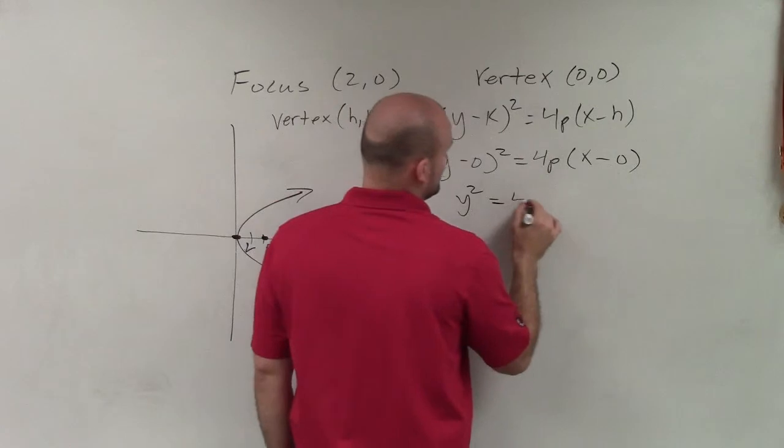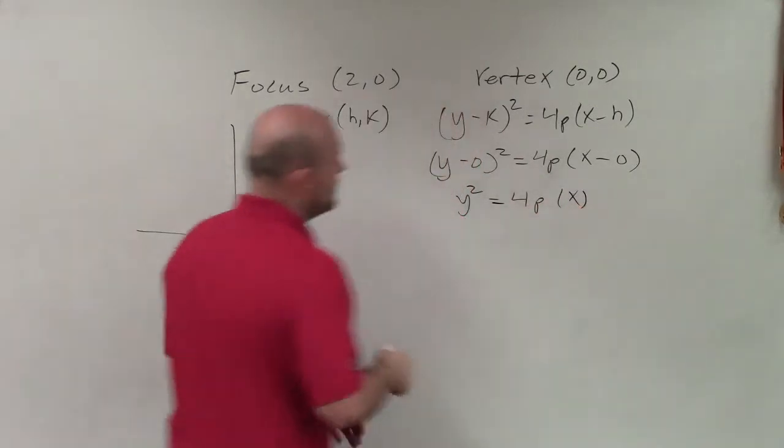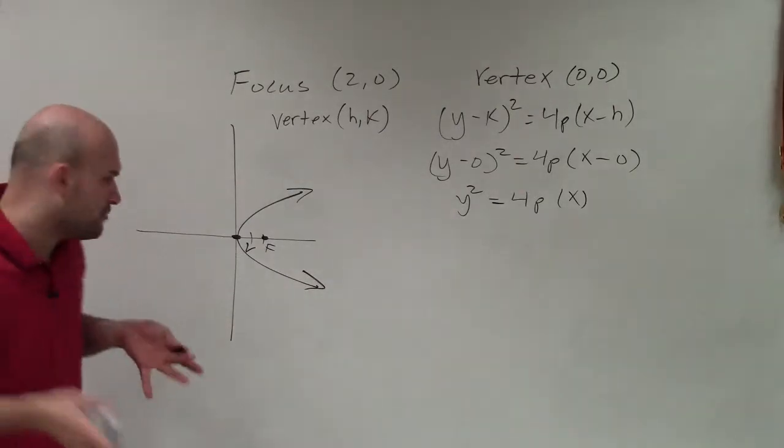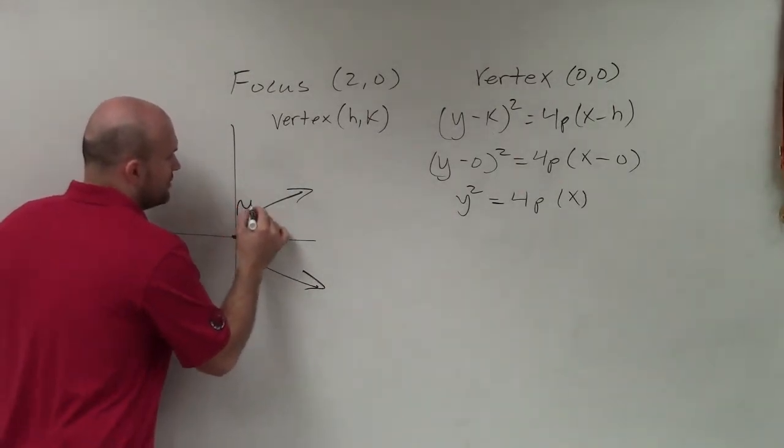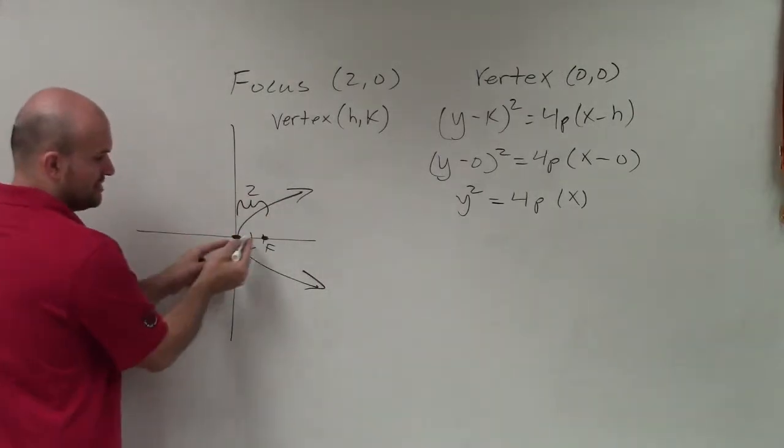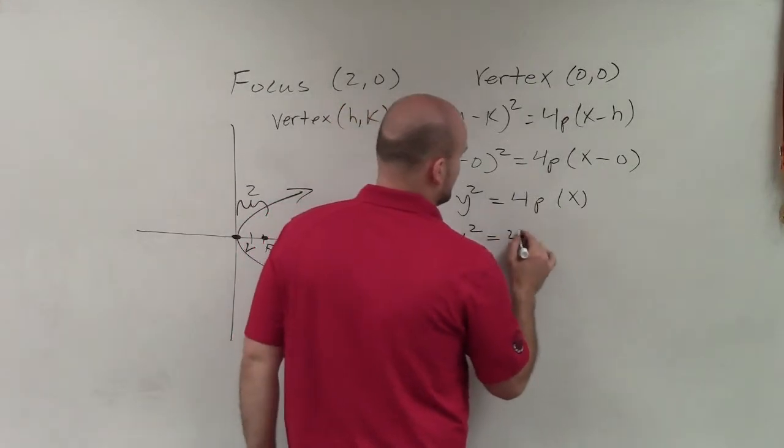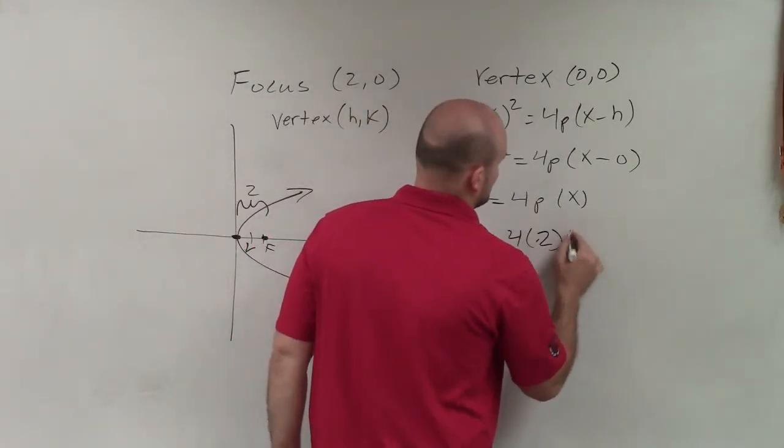Therefore, I have y squared equals 4p times x. Now we need to be able to figure out, well, what is p? Remember, p is the distance from your vertex to your focus. So therefore, that distance is 2. You can see I went over 2. So now I'm going to plug in 2. So I have y squared equals 4 times 2 times x.